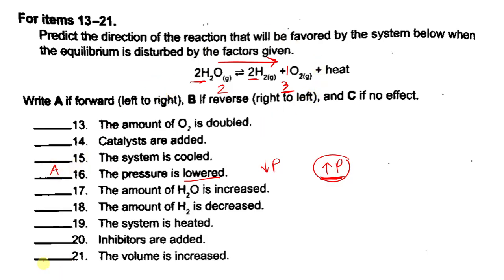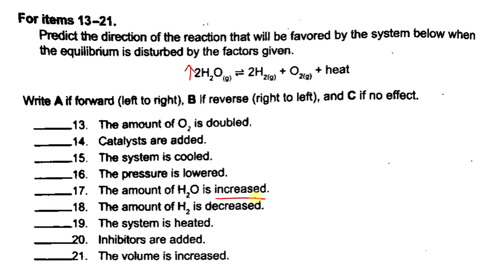Number 17: the amount of H₂O is increased. H₂O is one of our reactants. We are increasing the amount of H₂O, so to balance this, the equilibrium will shift to the right to use this extra amount of H₂O. So this favors the forward reaction.